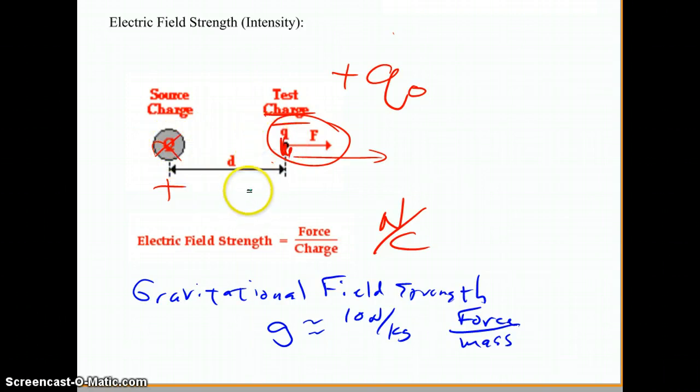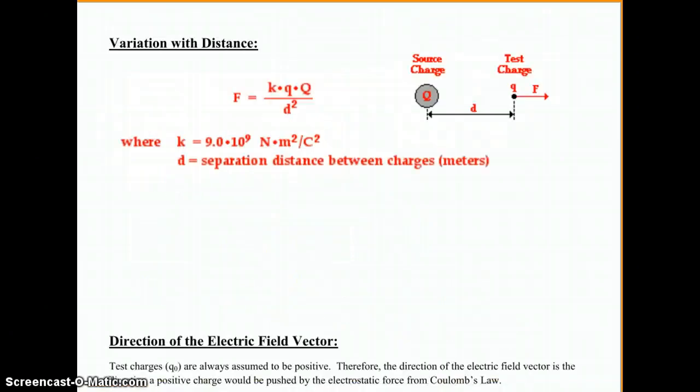Now, it does vary with distance, similarly to little g, the gravitational field strength. That always varied with distance in terms of the farther we got from a planet, the less force of gravity the planet had. So it's similar, so here's how that works.